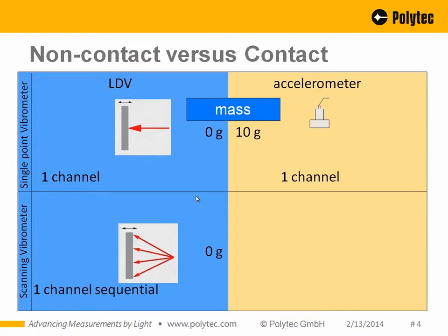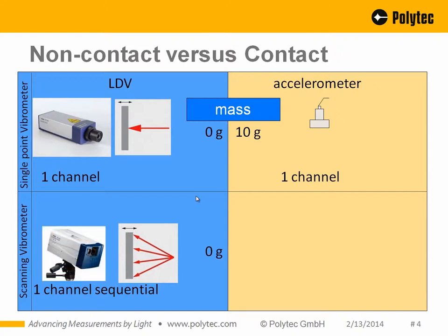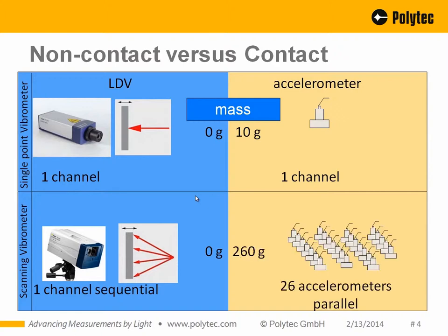There are more lightweight sensors on the market — that 10-gram figure is just an example. With an optical sensor you probe at one point with no influence. In scanning laser vibrometry, a laser scans over the surface and probes at different points, as is typically done in experimental modal analysis. With 26 accelerometers, for example, you would have 260 grams total, which will significantly influence a lightweight structure.